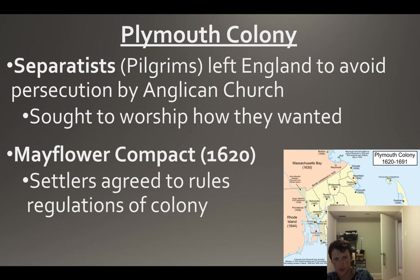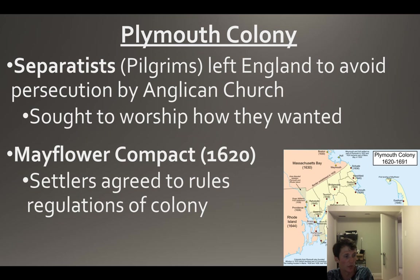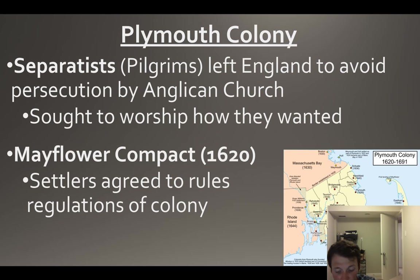Through a roundabout way they eventually end up in the New World. They were heading for the New York area but screwed up and landed in Massachusetts - it was getting late in the season, it was around November, and winter was coming. They just land there and start going. They sign the Mayflower Compact in 1620, a kind of direct democracy where they agree to rules and regulations of the colony before they get off the boat.